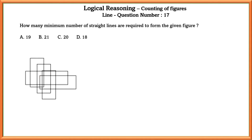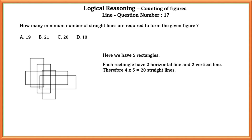Counting of figures — lines. Question number seventeen: how many minimum number of straight lines are required to form the given figure? Here we have a total of 5 rectangles, and each rectangle has 2 horizontal lines and 2 vertical lines, making 4 lines per rectangle. Therefore, 4 times 5 equals 20 straight lines.